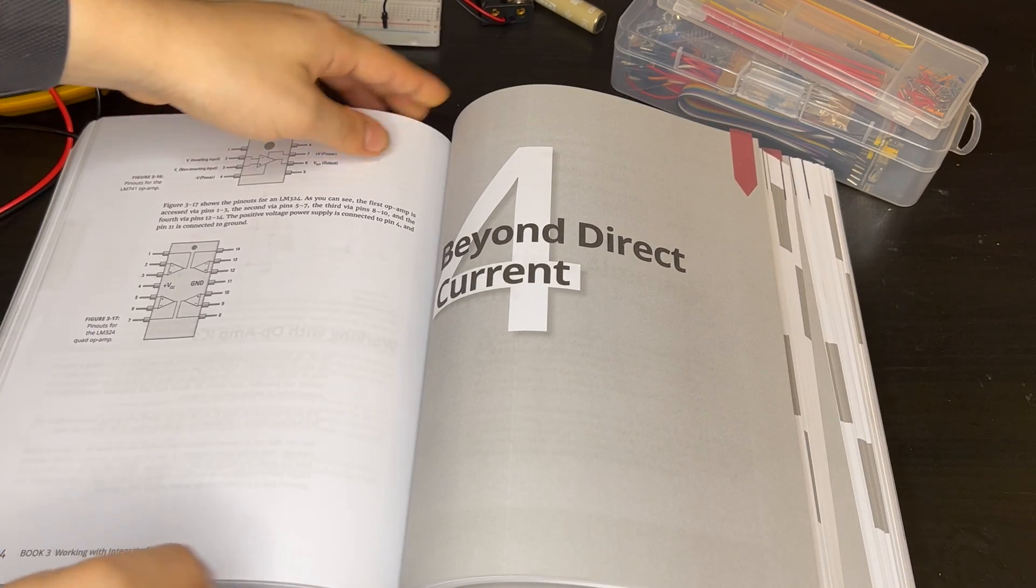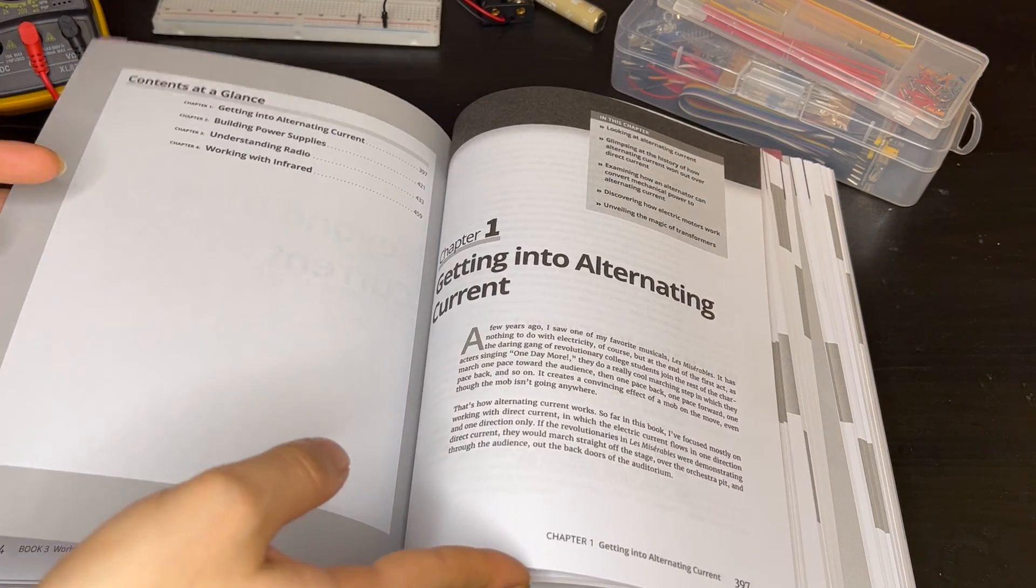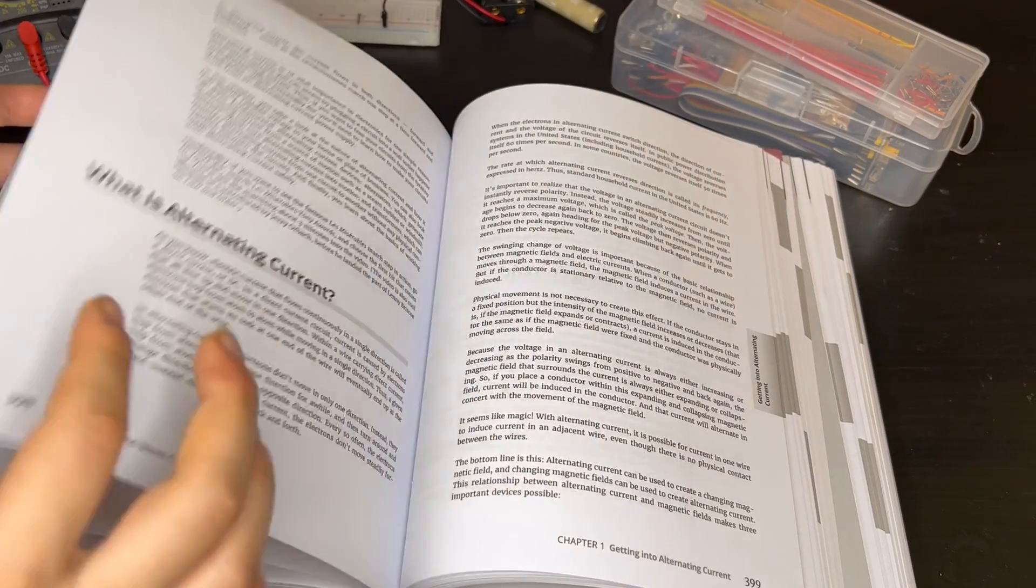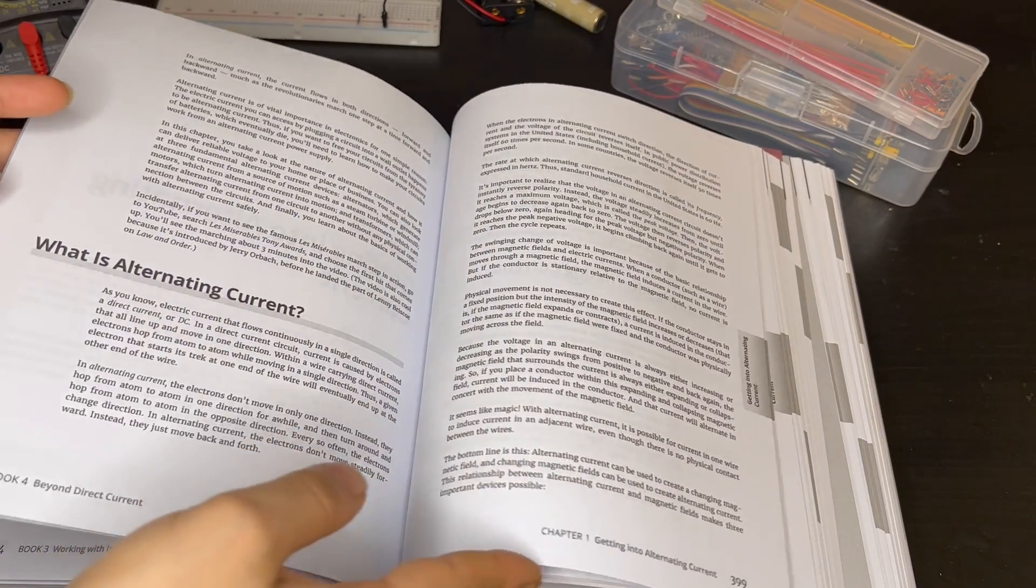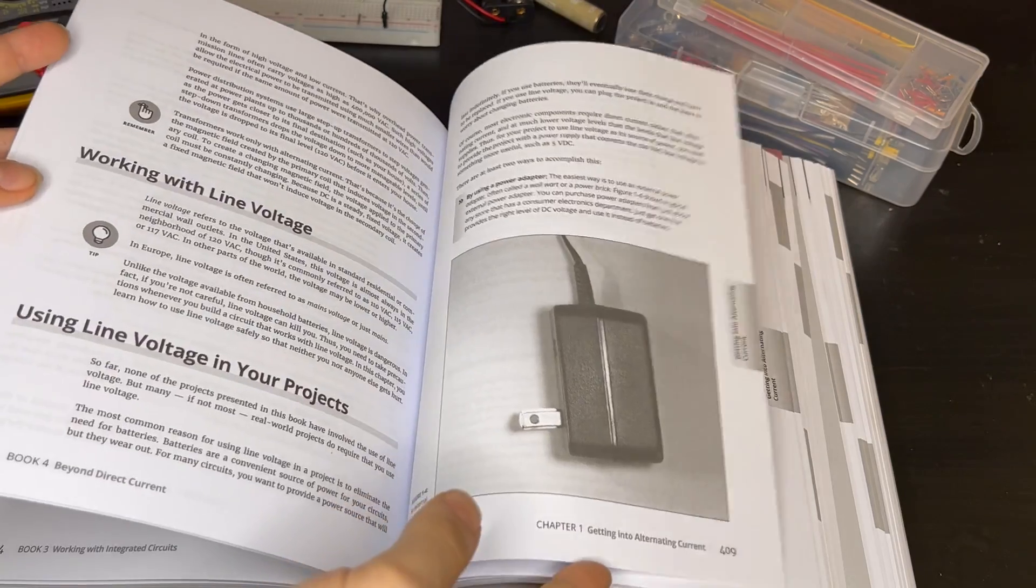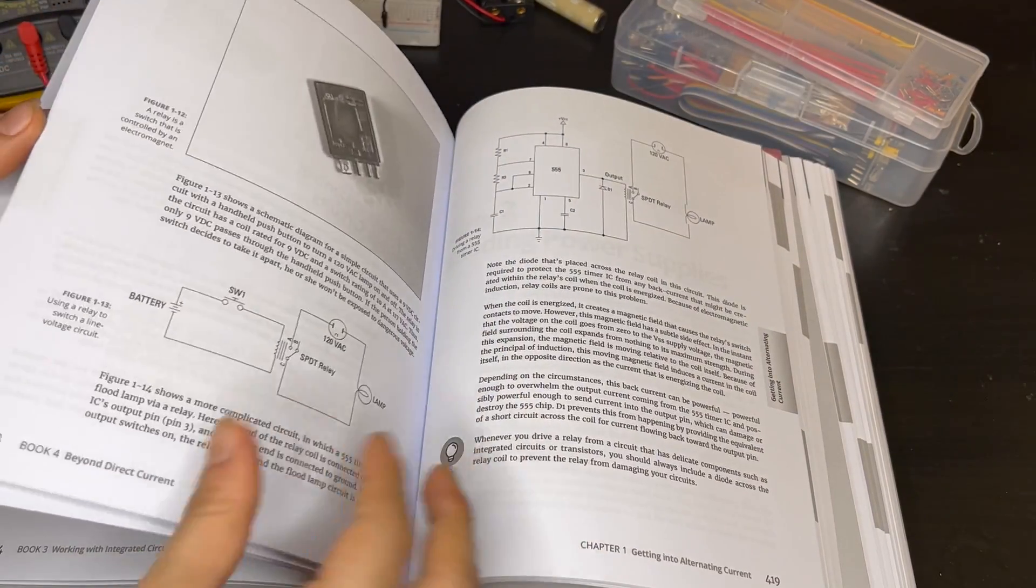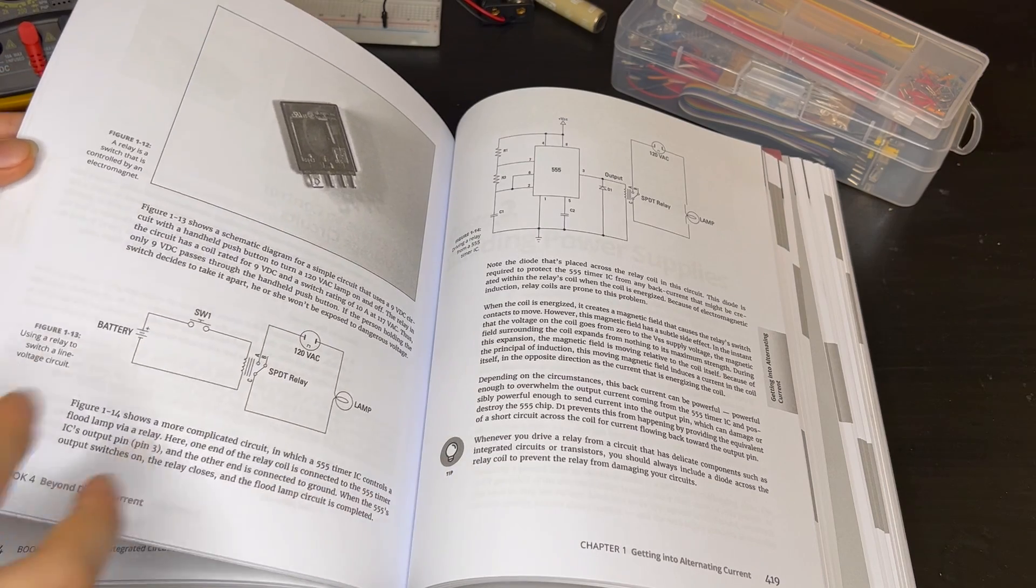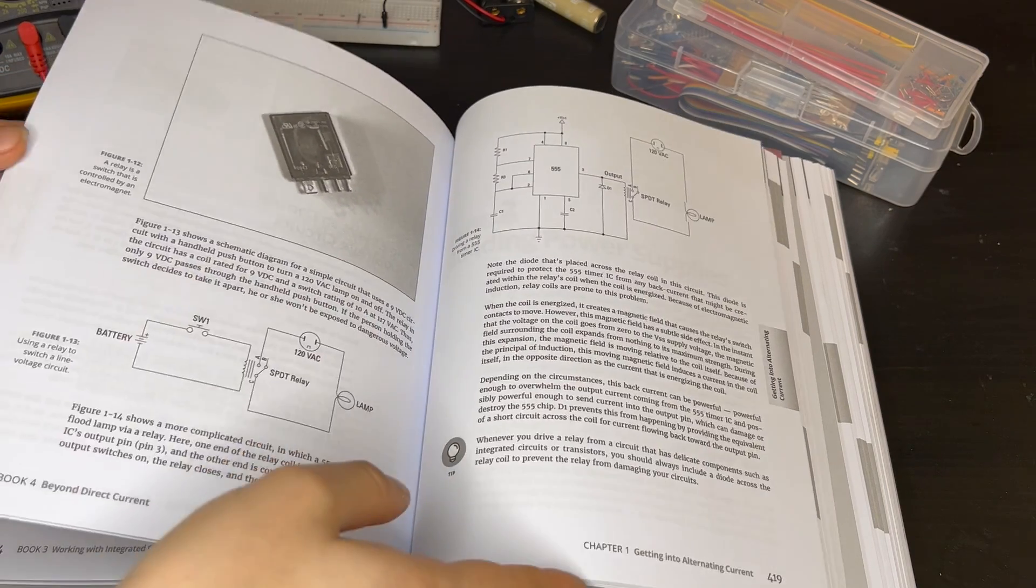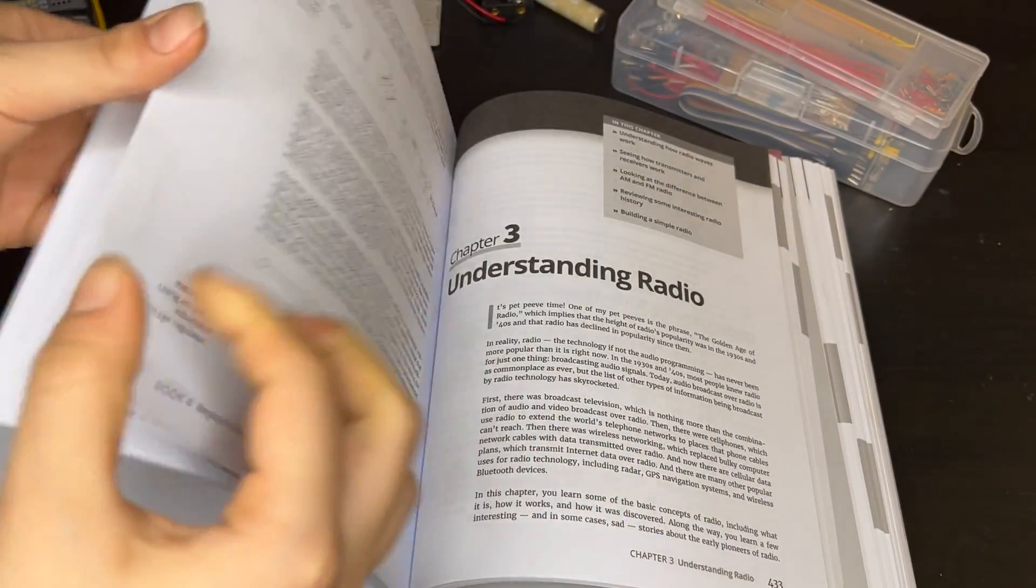Book Number Four is called Beyond Direct Current. In this book, you start dealing with alternating current. It shows how in our houses we have AC current that needs to be converted to DC to power our normal devices. Using elements from previous sections, it shows the circuits and concepts needed for this conversion.